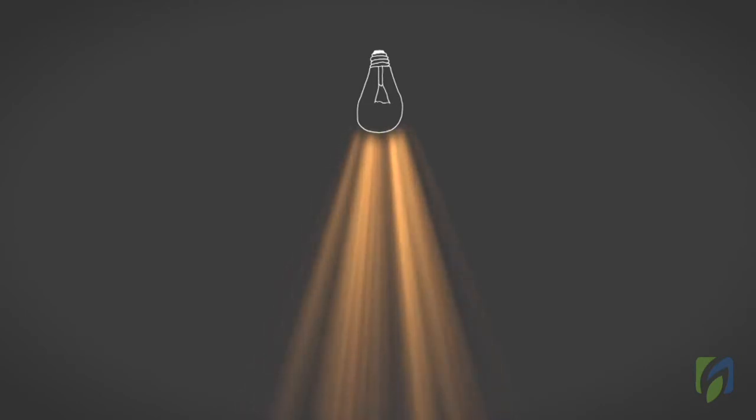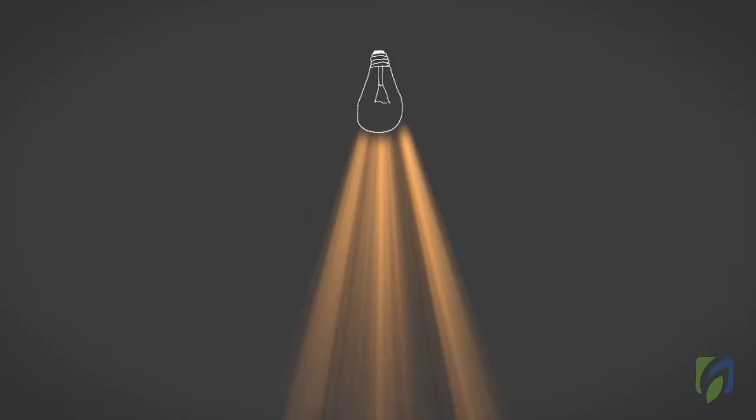Light quality can be measured in two ways. One, light intensity. This is the instantaneous amount of light received by the plants.